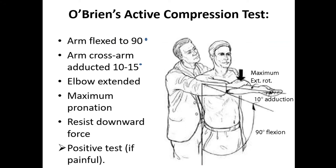O'Brien's active compression test: The patient's arm is flexed to 90 degrees and cross-body adducted 10 to 15 degrees, with the elbow extended and forearm in maximum pronation. The examiner resists a downward force applied to the patient's arm. If pain is produced during this activity, the test is positive.